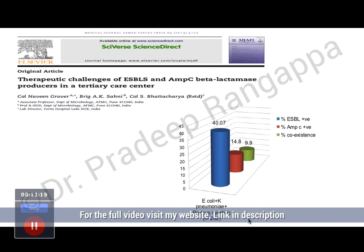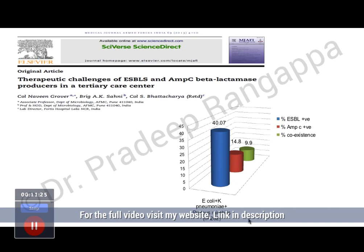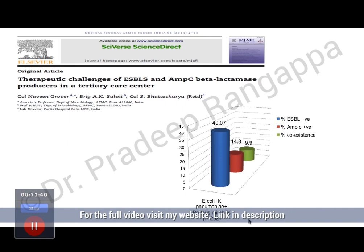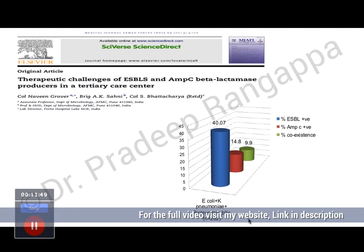This study came from AFMC. They found ESBL constituted the most significant bacteria conferring resistance. This was from 2015. AMP-C was 14.8% and coexistence happened in 9.9%. This was when there was a resurgence of the whole resistance pattern. Initially around 10 years back, ESBLs were more common, but nowadays we are seeing AMP-C, KPC, and NDMs coming in.